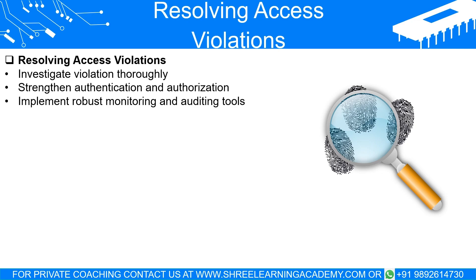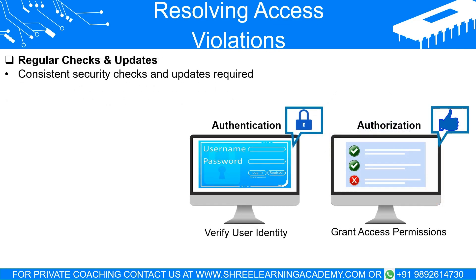Once detected, it's important to resolve the access violation. This typically involves a thorough investigation to understand how the violation occurred, followed by appropriate steps to rectify the issue and prevent future breaches. This may include strengthening the system's authentication and authorization mechanisms, patching software vulnerabilities, and implementing more robust monitoring and auditing tools. Remember, detecting and resolving access violations is a continuous process and requires regular checks and updates to the system's security measures.